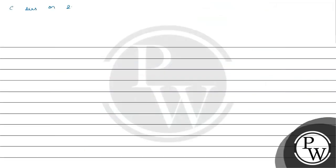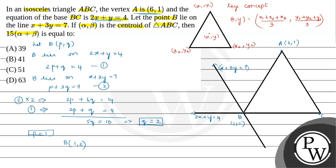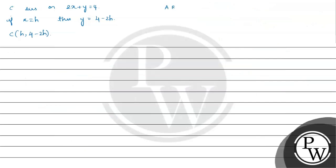Now the point C lies on the equation 2x + y = 4. If x = h, then y = 4 − 2h, so let us take the coordinate of C as (h, 4 − 2h). In the question, triangle ABC is isosceles, so AB = AC. Using the distance formula, A is (6, 1), B is (1, 2), and C is (h, 4 − 2h).